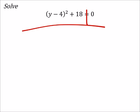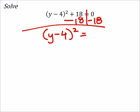So I'm going to subtract 18 from both sides, and hopefully this one will answer your question there. Now this gives us (y - 4)² = -18.